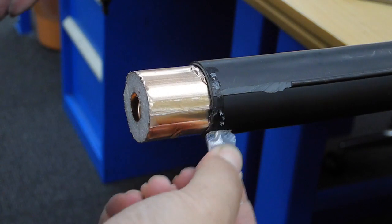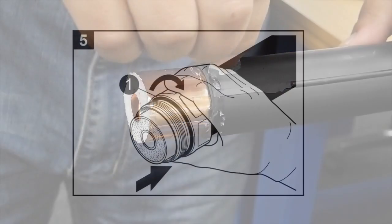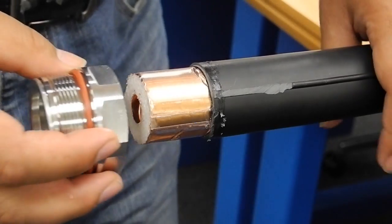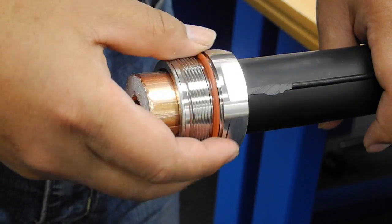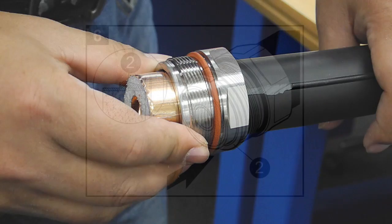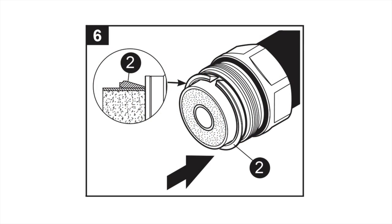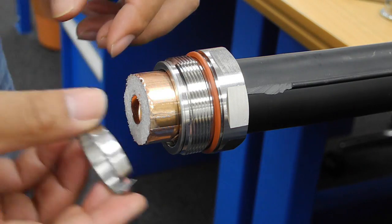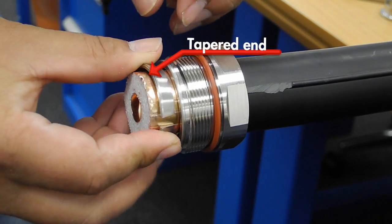Apply a thin layer of grease around the end of the jacket. Slide the clamping nut over the jacket so that the threads face the cable end. Place the clamp ring over the foil, making sure the tapered end is toward the clamping nut.